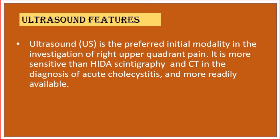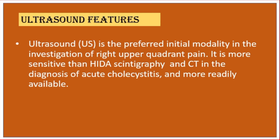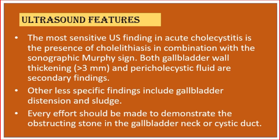Ultrasound features. Ultrasound is the preferred initial modality in the investigation of right upper quadrant pain. It is more sensitive than hepatobiliary scintigraphy and CT in the diagnosis of acute cholecystitis and more readily available. The most sensitive ultrasound finding in acute cholecystitis is the presence of cholelithiasis in combination with the sonographic Murphy sign.